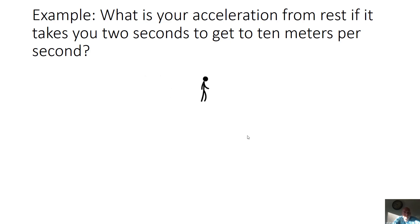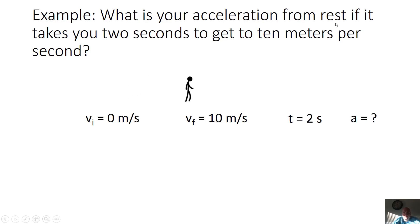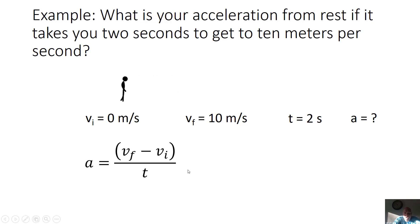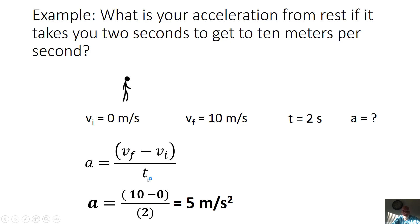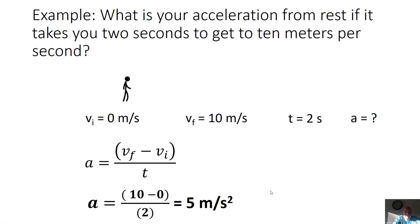Example: what is your acceleration if it takes 2 seconds to get from rest to 10 m/s? Givens: VI = 0, VF = 10 m/s, T = 2 s; solve for A. With three knowns and one unknown, use A = (VF − VI)/T. Plug in: (10 − 0)/2 = 5 m/s². Knowing your units is important — when you use MKS units going in, the unit for acceleration will be meters per second squared.